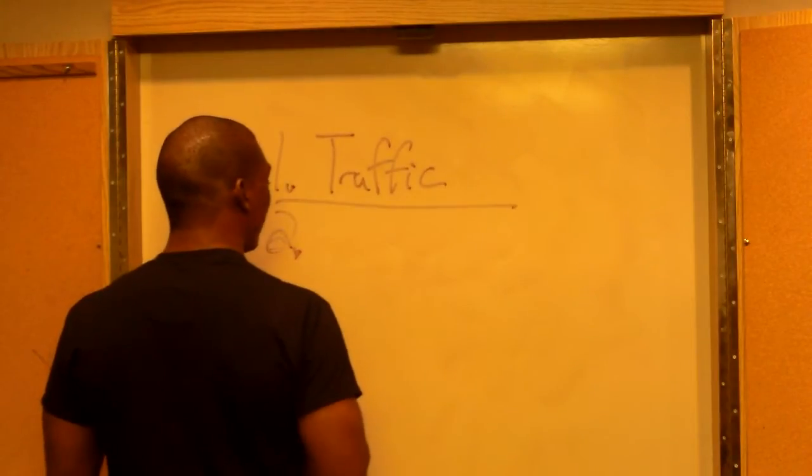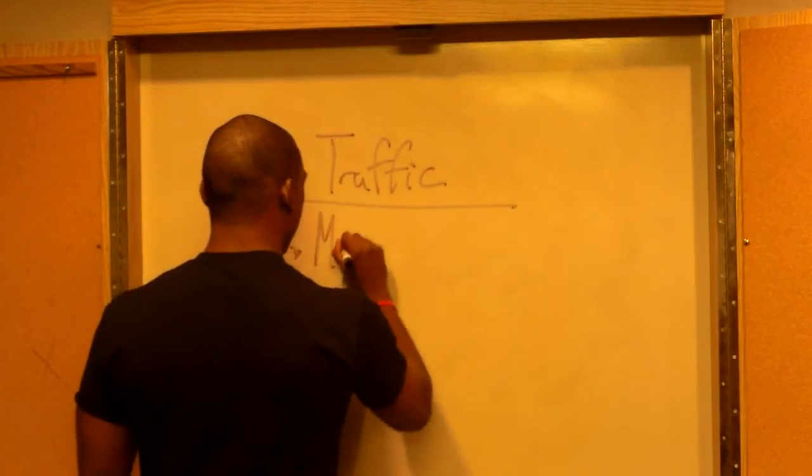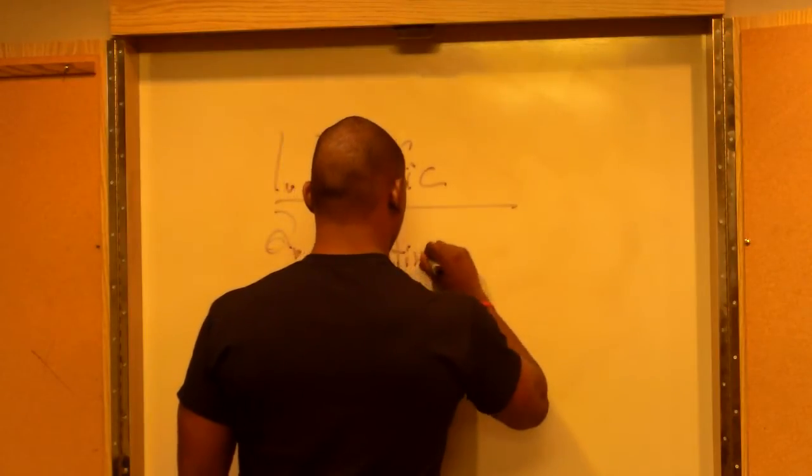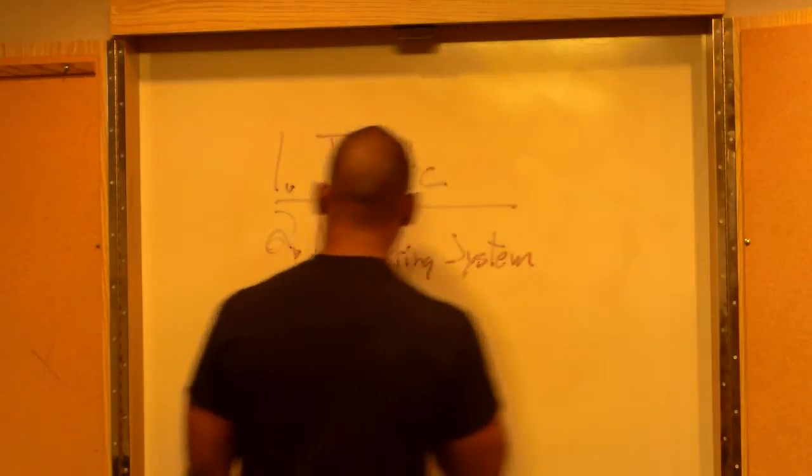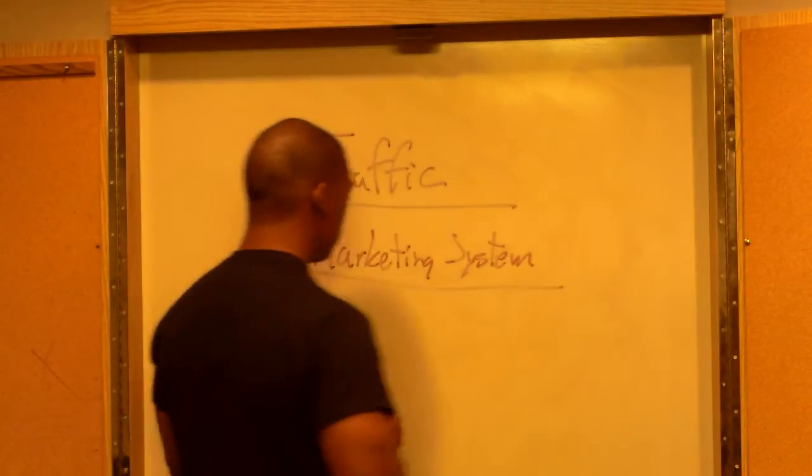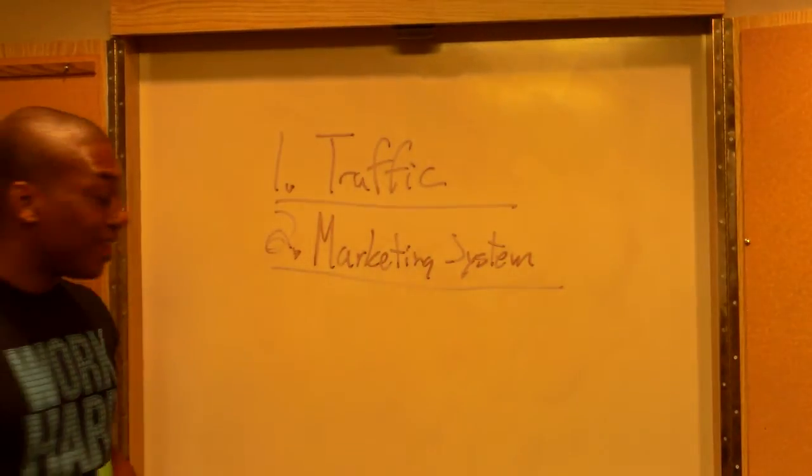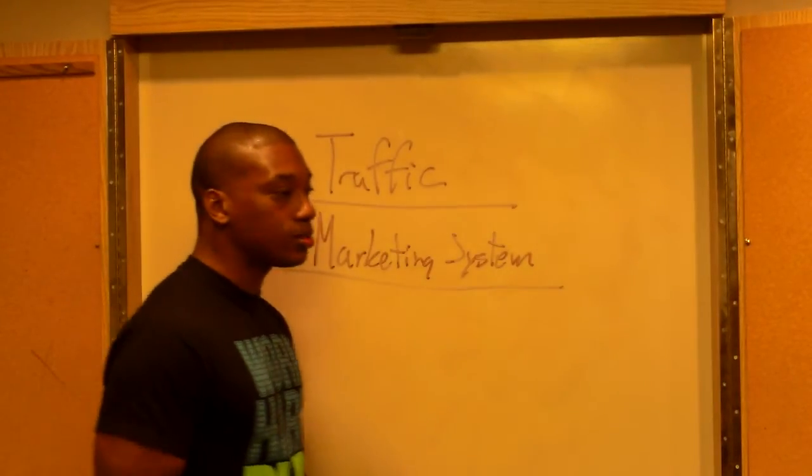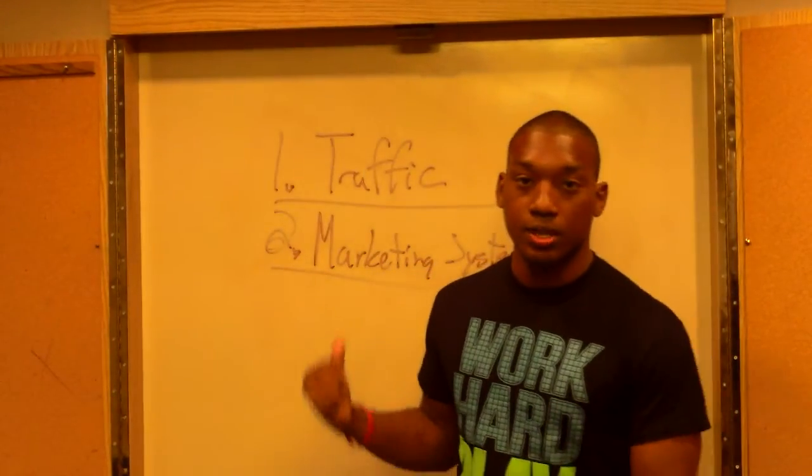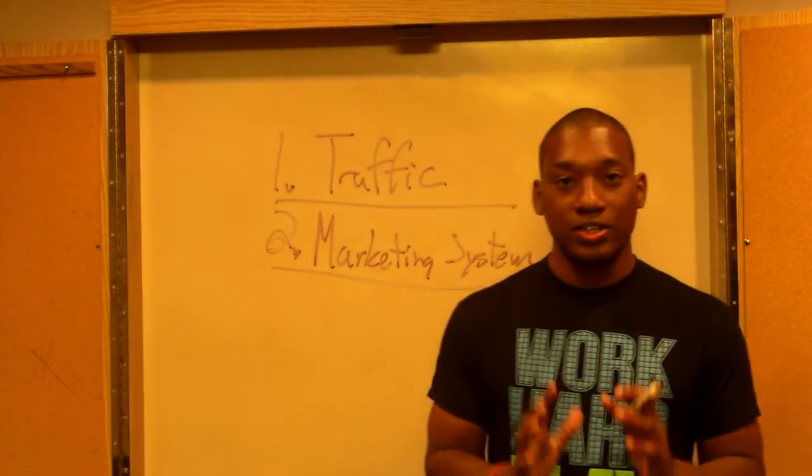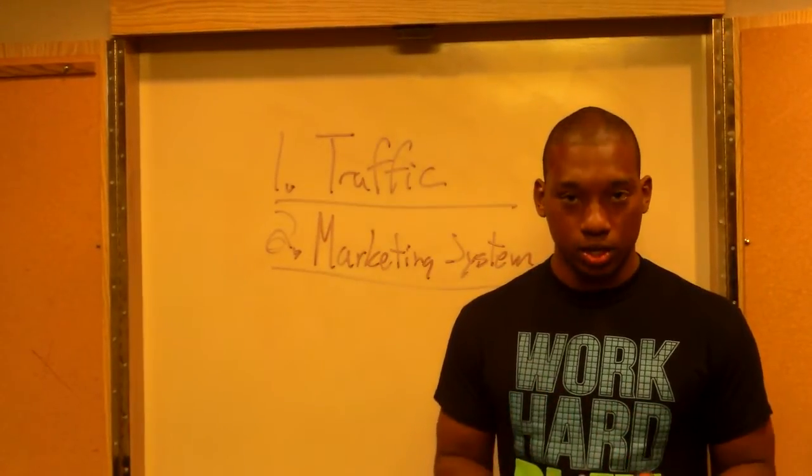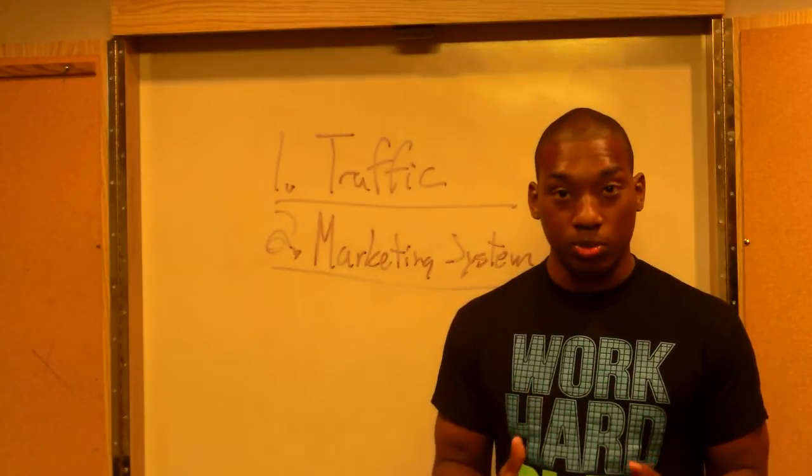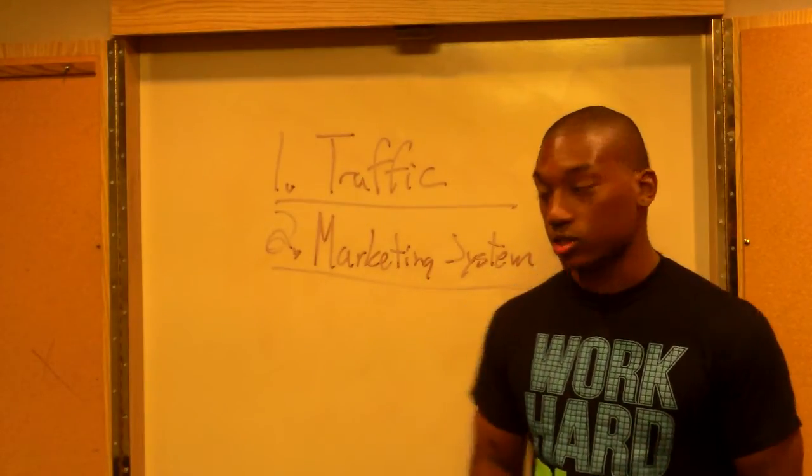So let's go to number two. Number two is having a marketing system. See, this is key right here. Having a marketing system, an actual marketing system, a system that is designed to go out and create money for you. You see, when you have a system in place, what it does is save you time, energy, and money. That's what you require. That's what you need in your business so that you can go out and create success.